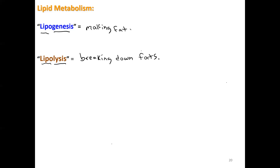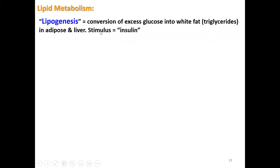When the body has more glucose than it needs for making ATP, fat cells and the liver are going to take that extra glucose and turn it into fat for long-term energy storage. When the body needs energy — say you skip some meals, or you have poorly managed diabetes, or someone's too sick to eat — your body is going to break down fats in lipolysis and those fats will be in your bloodstream for cells to use for energy.